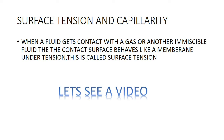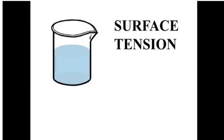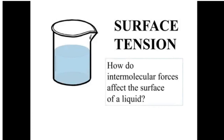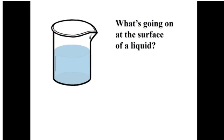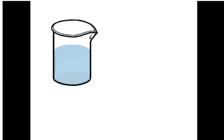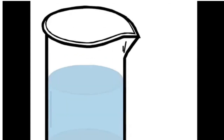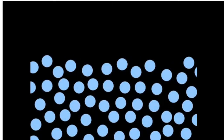To understand surface tension, let us look at how intermolecular forces affect the surface of a liquid. We will shrink to the nanoscale and look at individual molecules. Each blue circle represents a molecule of water.